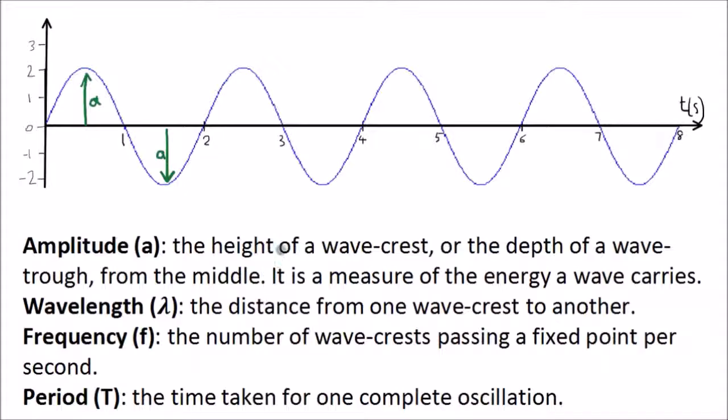The period is the time taken for one complete oscillation. So, if we take, for example, the starting point here at zero and we go along one full oscillation, one complete wave, we go up here down to the midpoint down and then back up to the midpoint again. That would be one full oscillation. And the time it takes to do that one full oscillation is called the period.